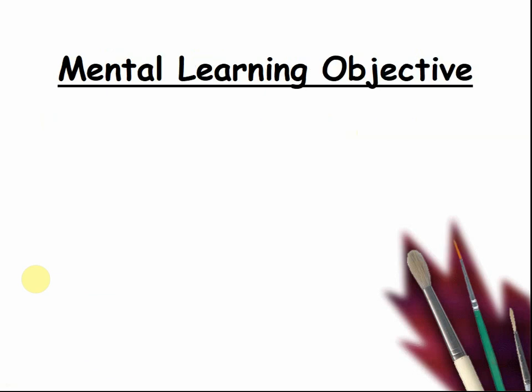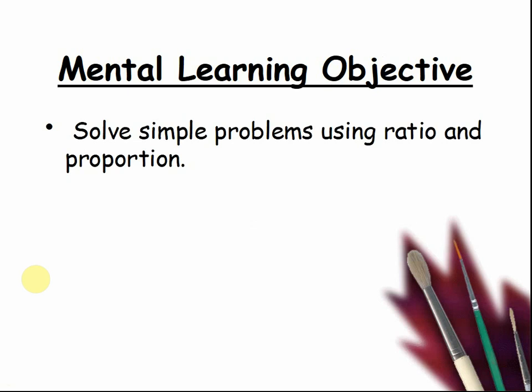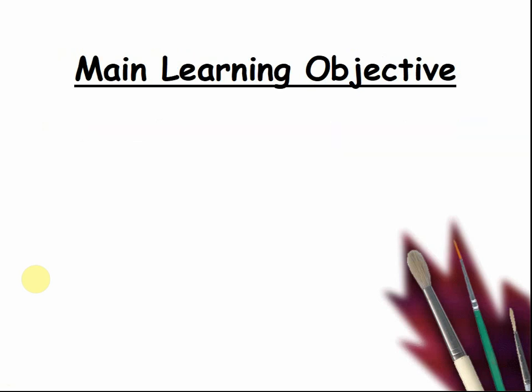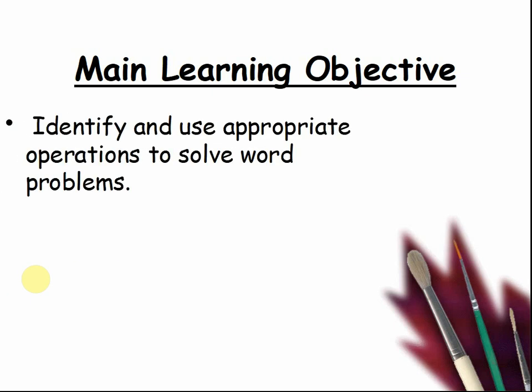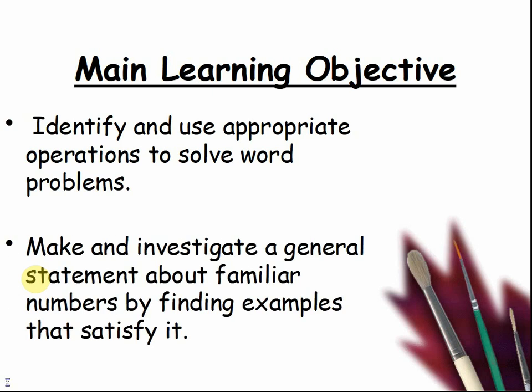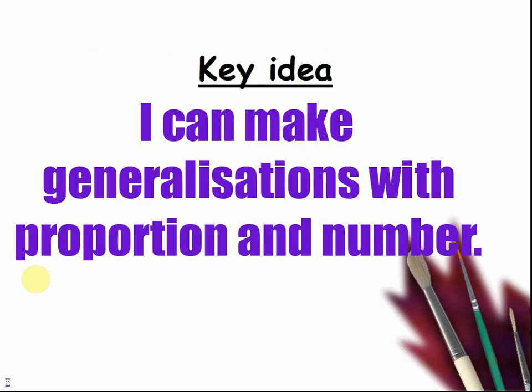Mental learning objective: Solve simple problems using Ratio and Proportion. Main learning objectives: Identify and use appropriate operations to solve word problems; make and investigate a general statement about familiar numbers by finding examples that satisfy it. Key idea: I can make generalisations with proportion and number. This is our big idea of the day, so keep it in your head.